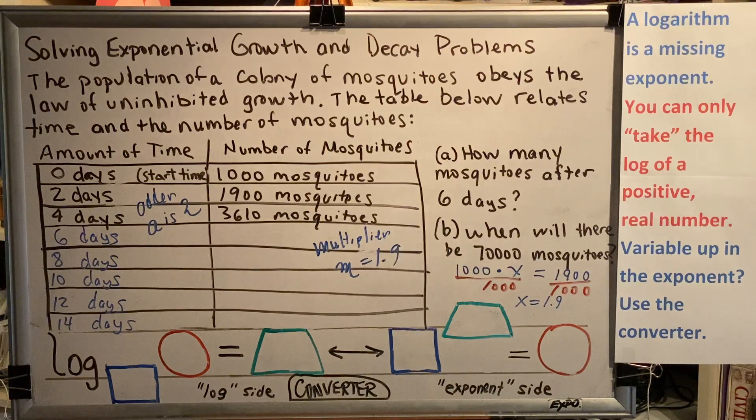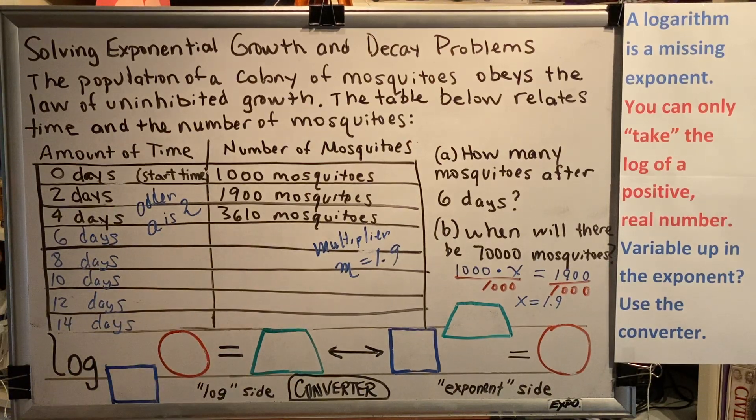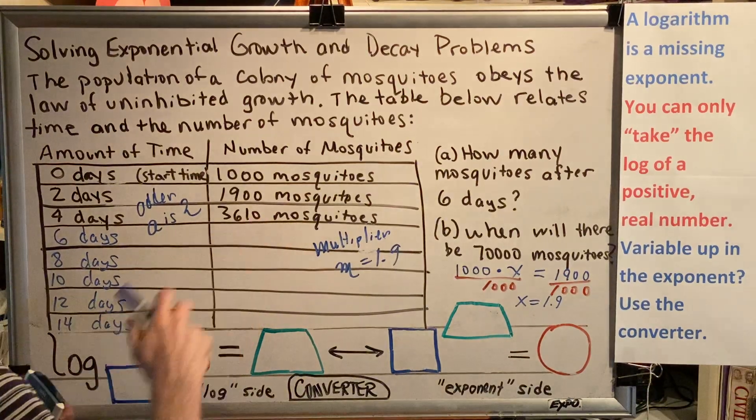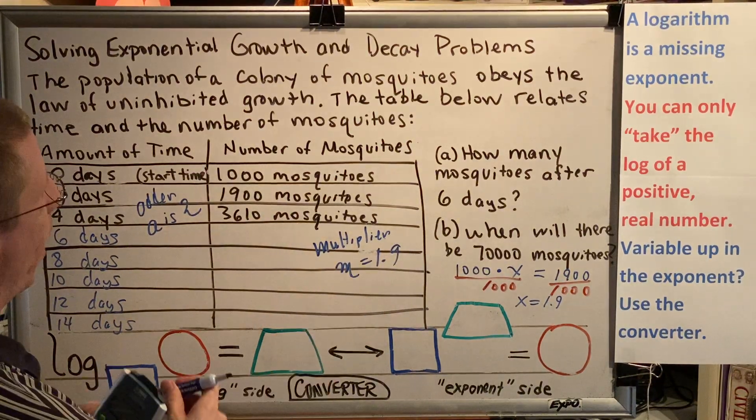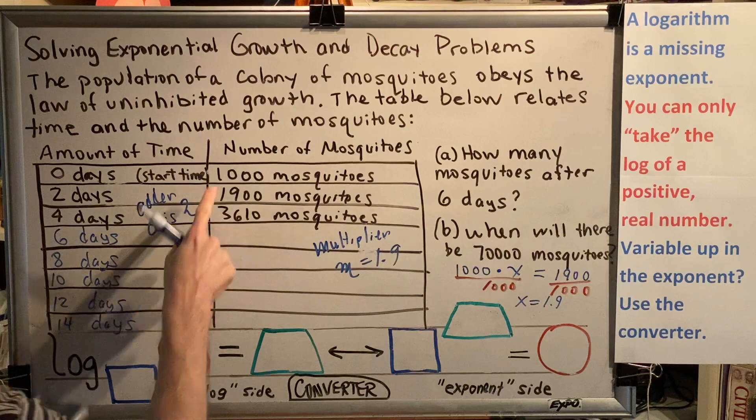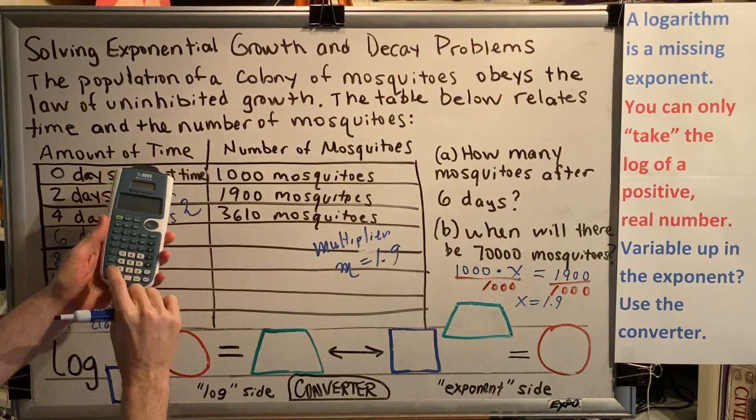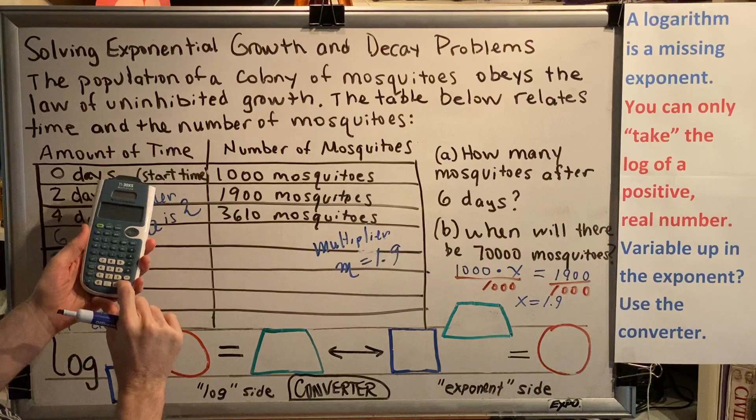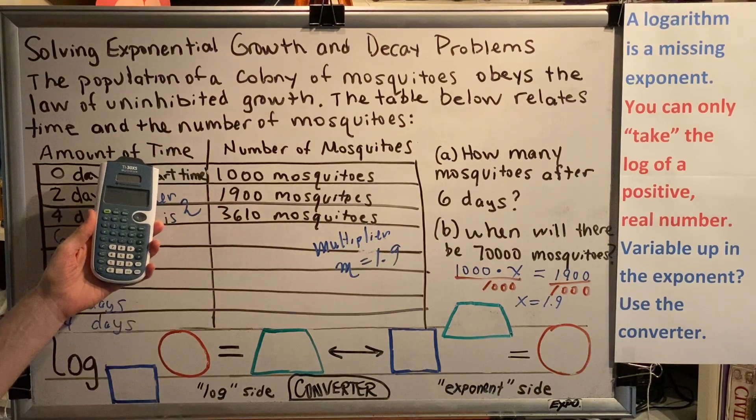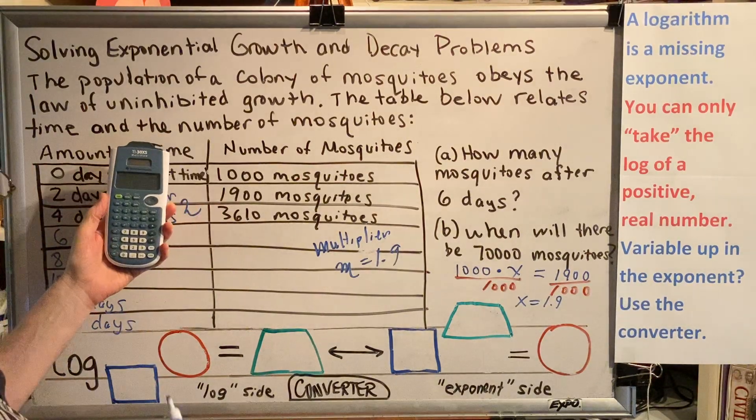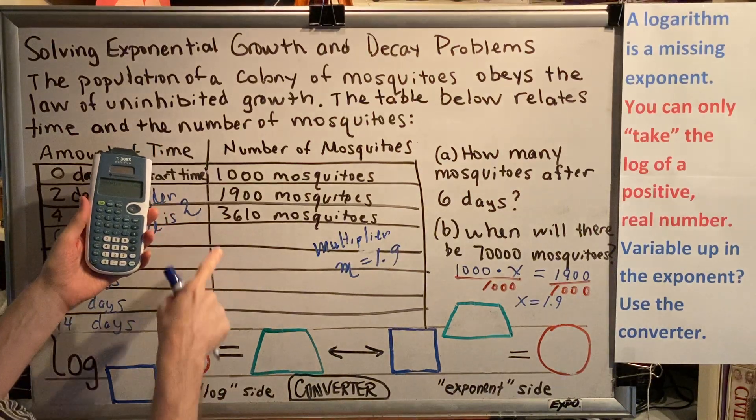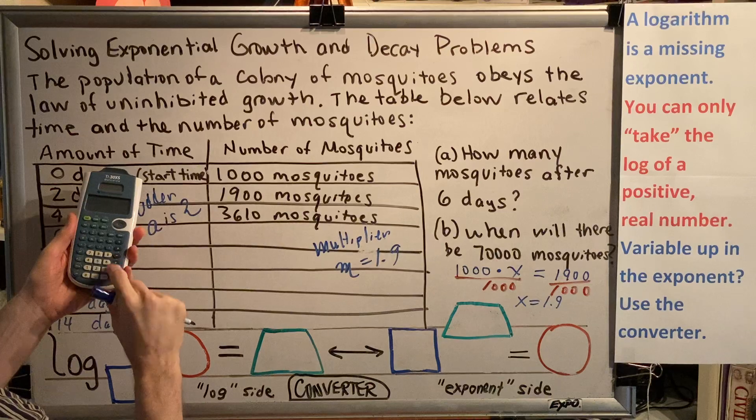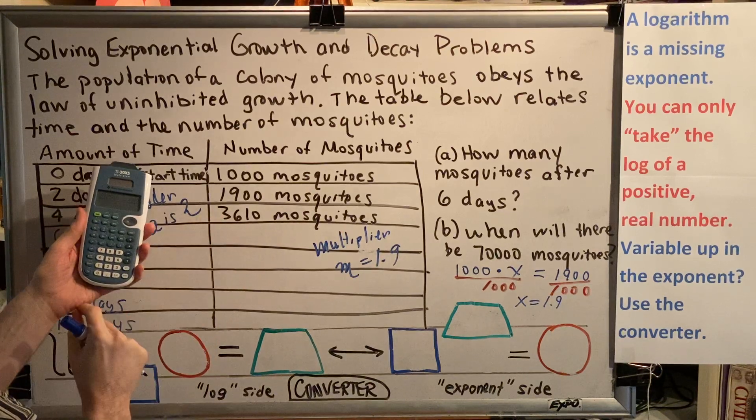Now that we've established the pattern, we can use it to fill in the rest of the table. If you want to know what the next number is, you just have to take the previous number and multiply it by 1.9. Let's start way at the top of the table. So 1,000 times 1.9 gives us 1,900. Follow along with me with your calculators. Put all these numbers in your calculators as we go together.